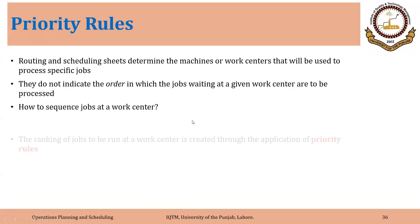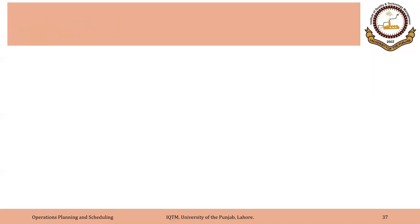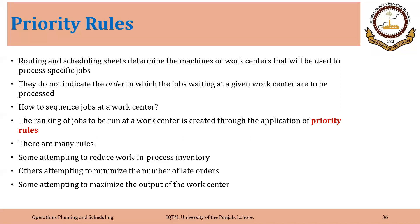We are going to start discussion on priority rules. We have discussed two tools: the routing sheet and the Gantt chart. The routing and scheduling sheet determines the machines or work centers that will be used to process specific jobs. They tell us the sequence of activities, but they do not indicate the order in which jobs waiting at a given work center are to be processed.